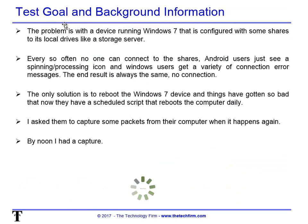The test goal and background information is quite simple. There's a device running Windows 7, configured with some shares to its local drives like a storage server or a little NAS. Every so often you can't connect to the shares. Android users just see a little spinning processing icon, and Windows users get a whole variety of connection errors when they try to connect to this share. The only solution they could find is to reboot the Windows 7 device, and it's gotten so bad that they actually put a script on it with a scheduler so it reboots the computer daily. So obviously we're trying to find a better solution than that.